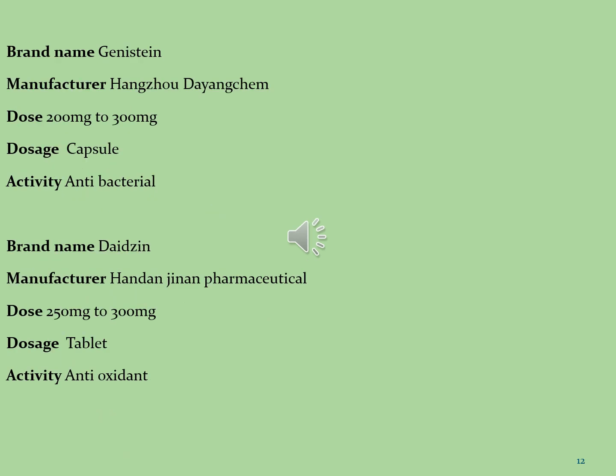The second brand is Genistein, manufactured by Hangzhou Pharmaceuticals, with dose 200 mg to 300 mg per day, formulated in capsule dosage form, and used as an antibacterial agent.